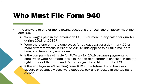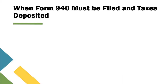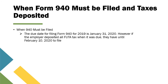If a company is not liable for FUTA tax because no payments were made, box C in the top right corner of the form is checked and part 7 is signed and filed with the IRS. If the employer won't be filing Form 940 in the future due to business closure or because wages were stopped, box D is checked in the top right corner. Form 940 for 2019 is due January 31, 2020; however, if the employer deposited all FUTA tax when due, they have until February 10, 2020 to file.